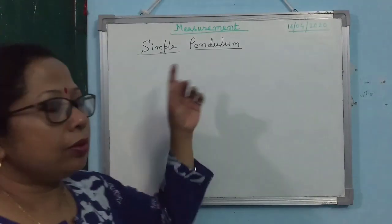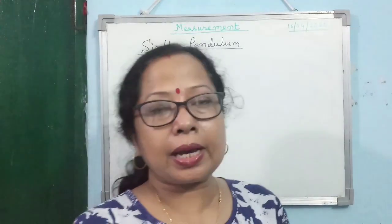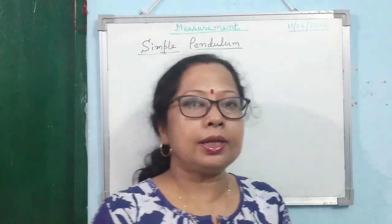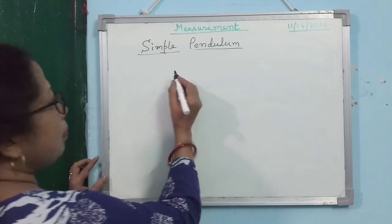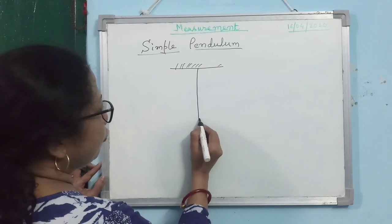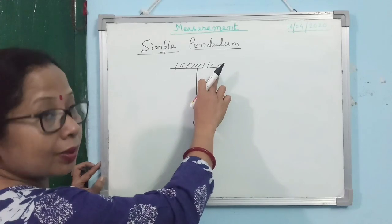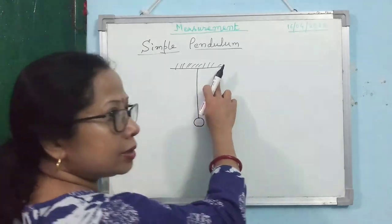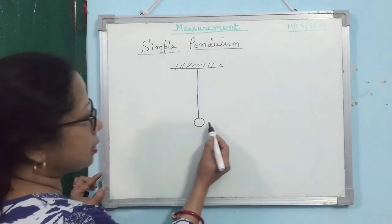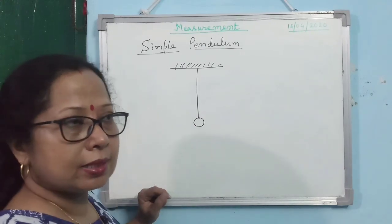Next is the simple pendulum. We have to know the physics behind simple pendulum because by using it we can measure time. So what is a simple pendulum? A simple pendulum is a heavy mass suspended from a rigid support. This support is rigid. The important points are: this is a rigid support, this is a heavy mass, and it is suspended by a massless inextensible string.